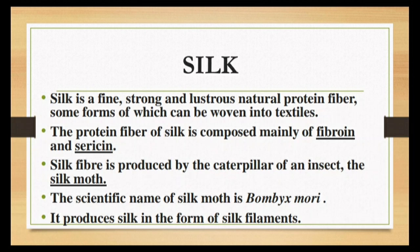Silk fiber is obtained from the caterpillar of an insect. It is basically produced by the caterpillar of an insect called the silk moth. The scientific name of the silk moth is Bombyx mori. It produces silk in the form of silk filaments — filaments means threads.